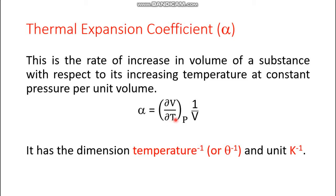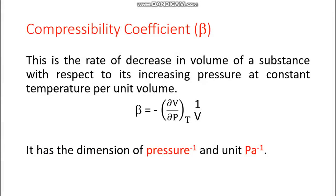What should be the dimension of alpha? Volume appears in both the numerator and denominator, so they cancel, leaving one over temperature. So the dimension of alpha is temperature inverse, and its unit should be kelvin inverse. Now the definition of compressibility coefficient is the rate of decrease in volume.